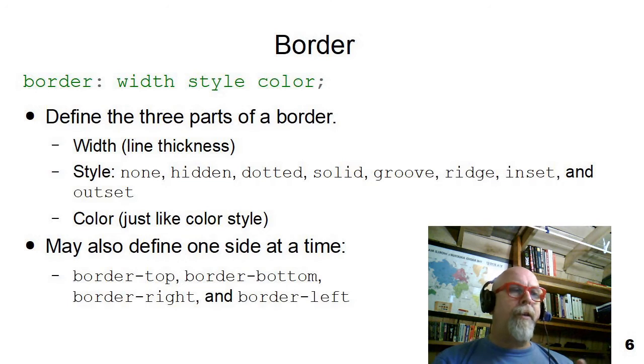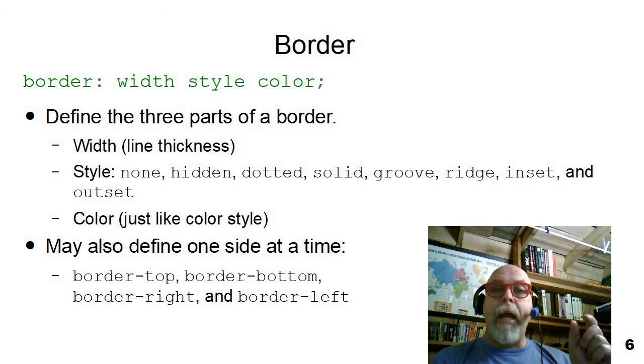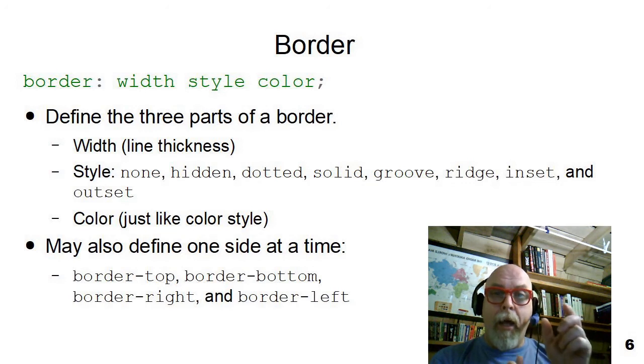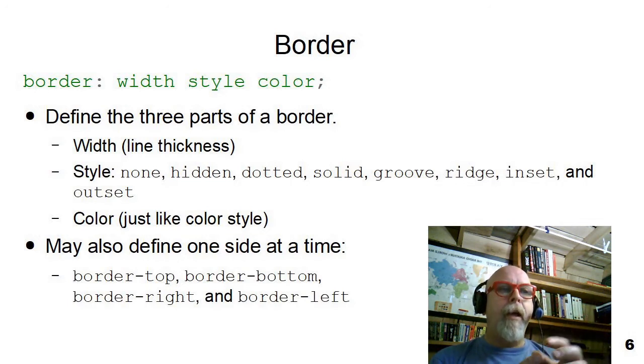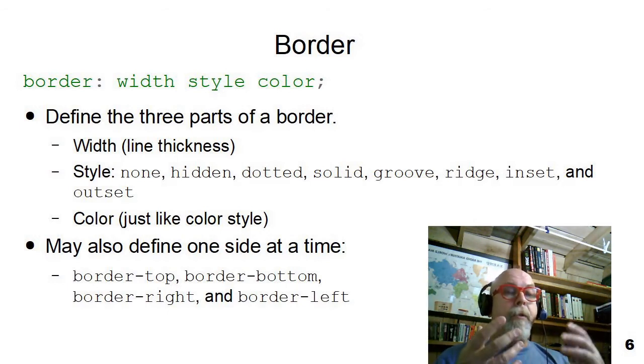For most, the groove or the ridge or the solid are what most people use for borders, but you can choose any of those types of borders you want. And then you put a third value out there, which is the color of the border. You could use any color, like you used in any of the background color statements for that color argument. You can also define one border if you want a border on the bottom but nowhere else. You can define border-bottom instead of border, but you still have to give it all three arguments. If you want to put a border left, border right, border top, you can do that.